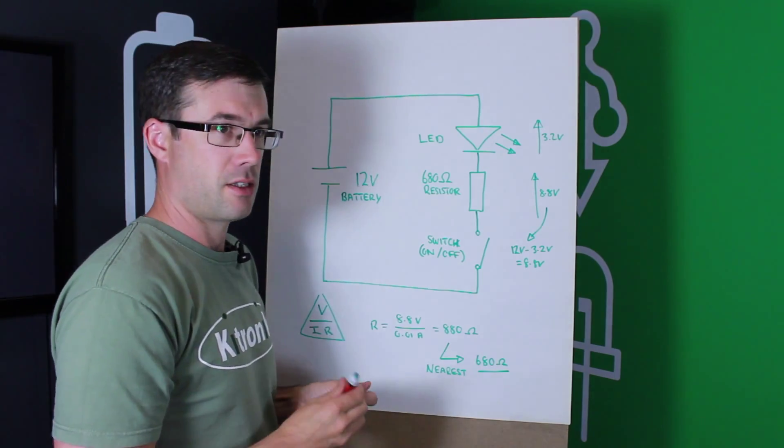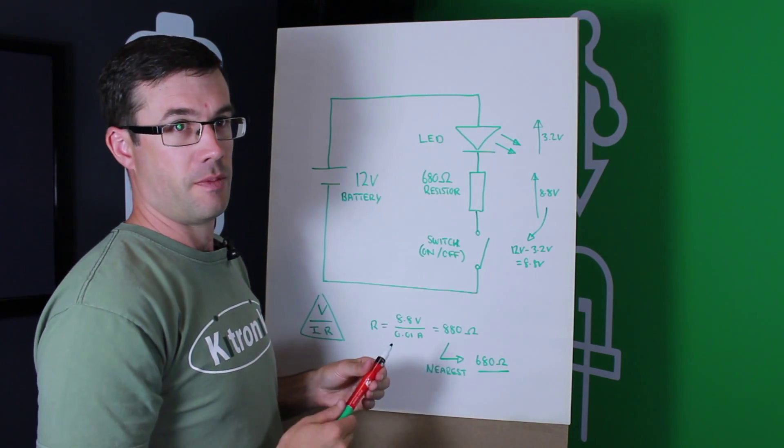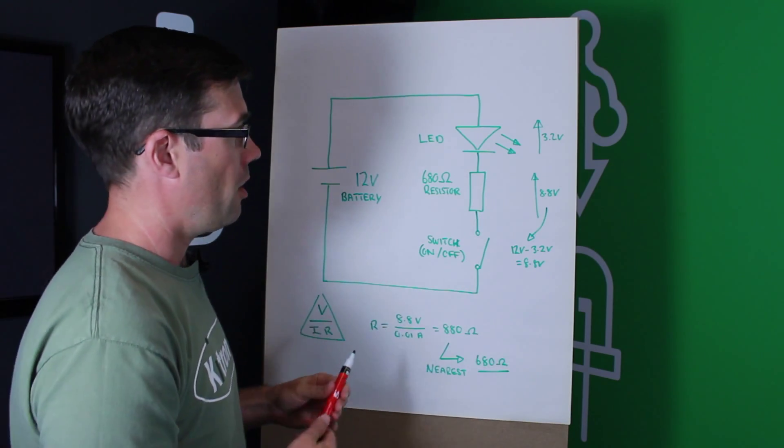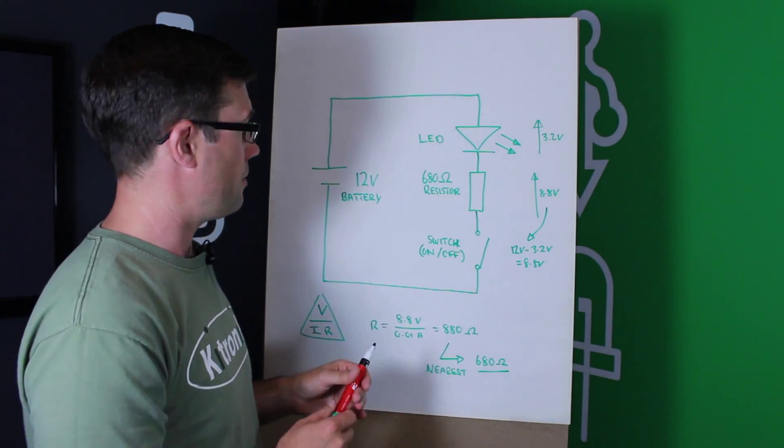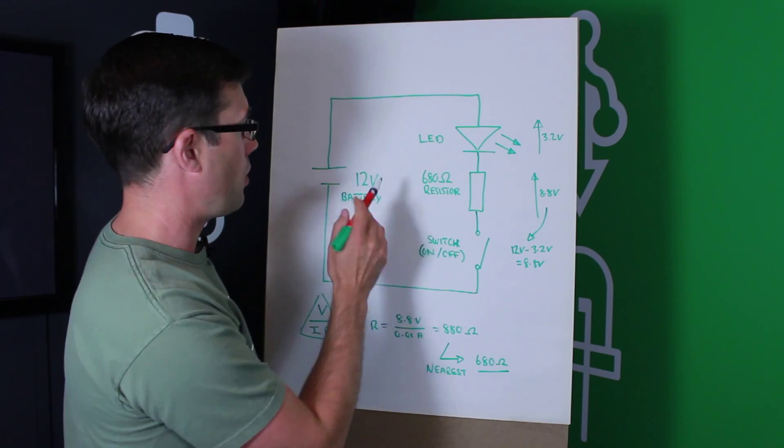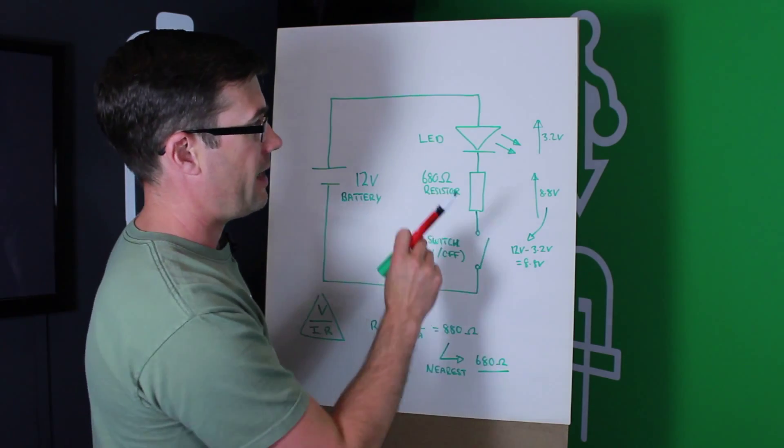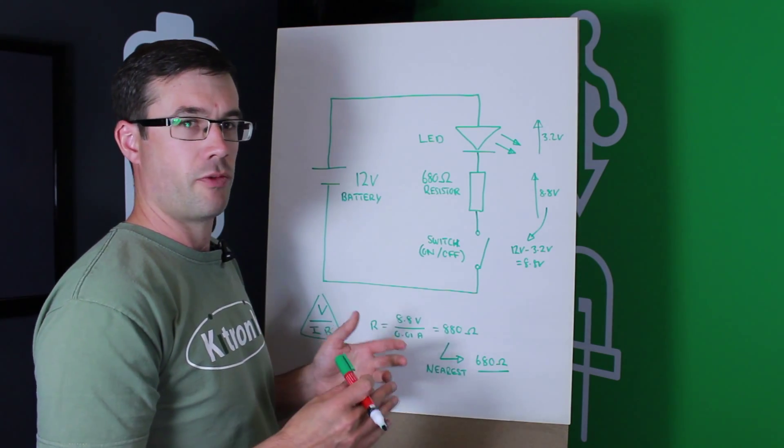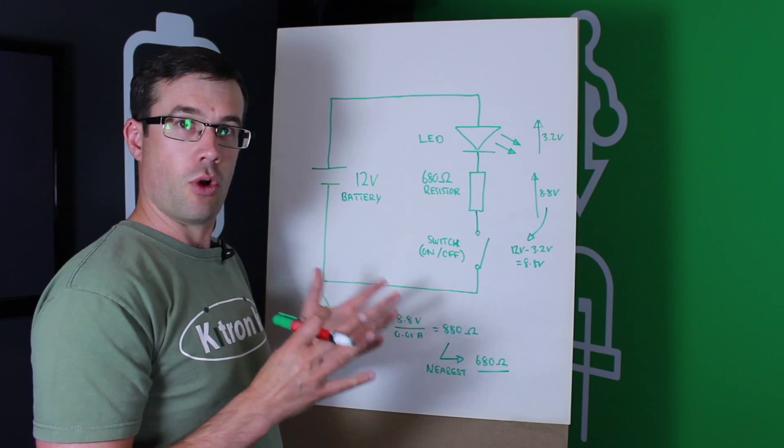Now, you might ask, why do we need a resistor? If you think about a light bulb, you normally just connect it up to the main supply and the light bulb lights. There's a very good reason. If you look here, we've got a 12-volt battery, and then the LED itself has something called a forward voltage. You can kind of think of this as the maximum voltage at which the LED will work.